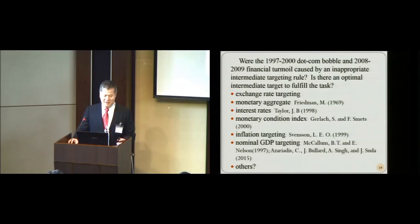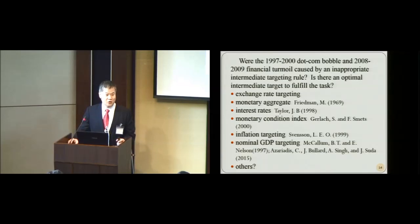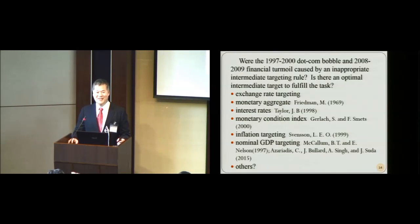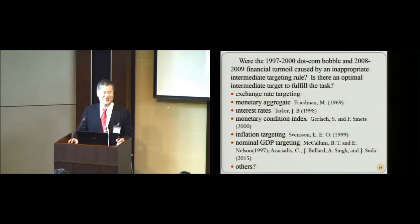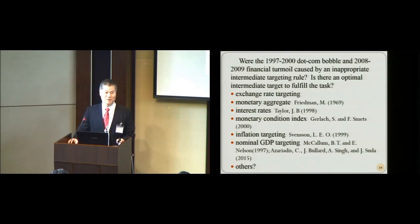Looking at the Fed's reaction, the timing was quite good — they reduced the interest rate before the peak, two or three months before. In that aspect, the Fed did a good job. However, looking at the long period of low interest rates, I don't know which theory would support such a long and such low interest rate, and I think the Fed maybe should take some responsibility for the dot-com crisis and the financial turmoil. In the literature, there are a few intermediate targeting rules such as exchange rate targeting, monetary aggregates, monetary conditions, and so on.